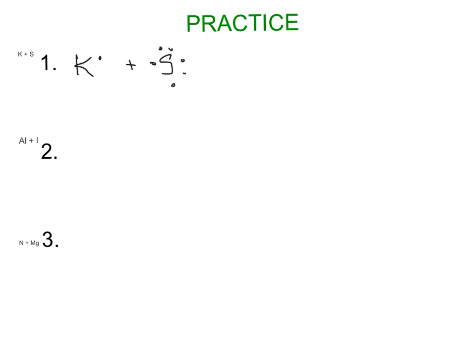Potassium is now stable — the next energy level in is full. But sulfur now has seven valence electrons and really needs eight, so we can add another potassium. In real life there are millions of atoms, so we draw another potassium with its one valence electron and draw an arrow of it going to the other missing spot next to sulfur. Now that potassium is fulfilled, and everybody has a stable octet — the two potassiums have lost their electrons, and sulfur has gained two electrons, so it's now stable.